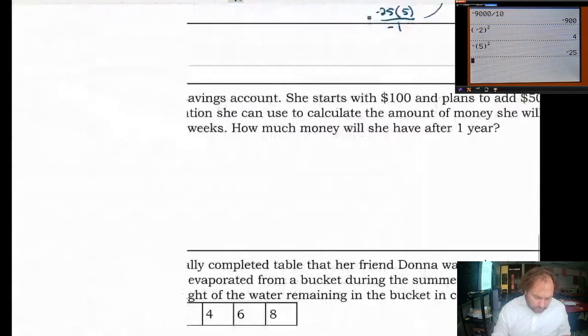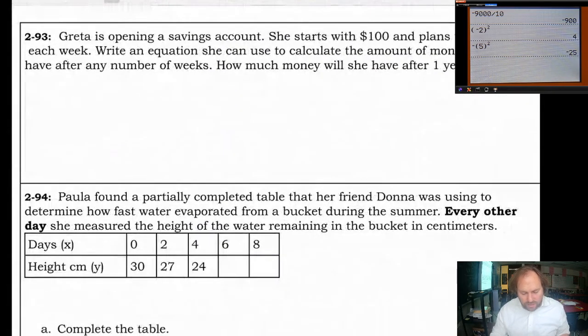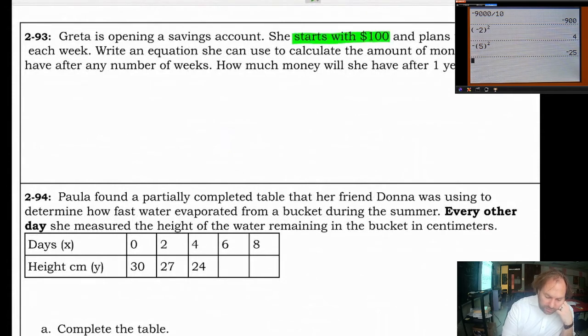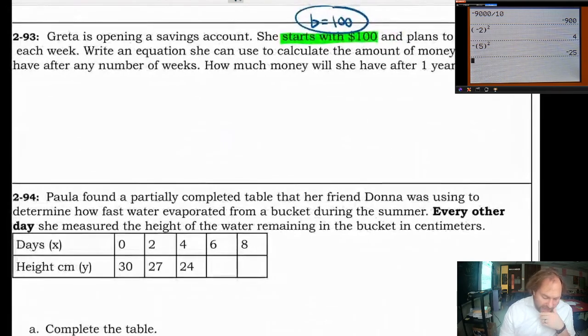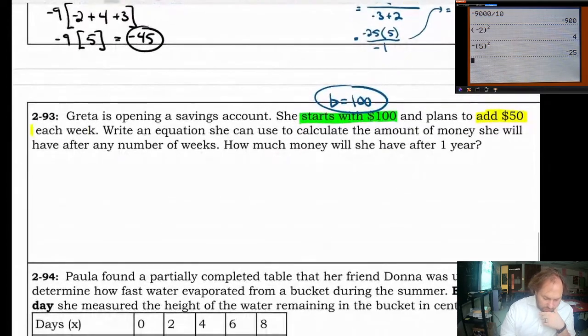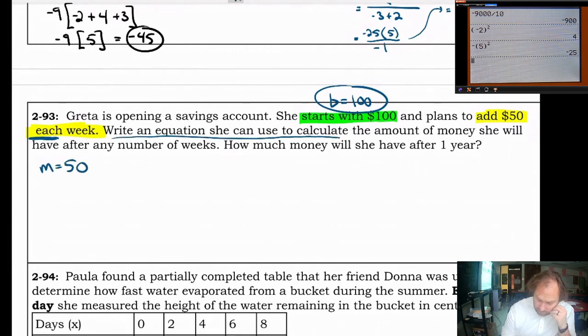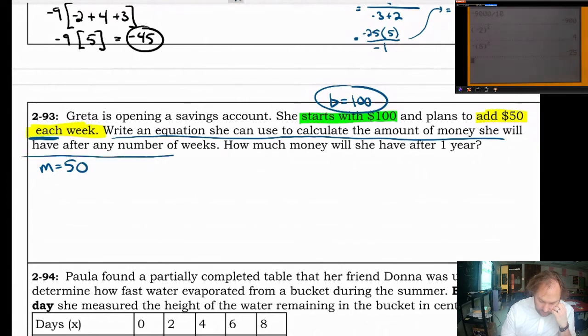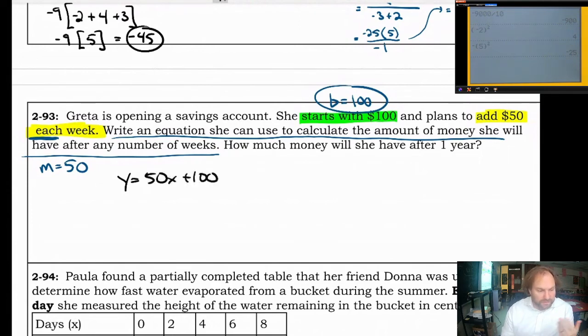Next question on the back side, we have 293. Greta is opening a savings account. She starts with $100. Starts with 100 is screaming out to me as a y-intercept or b-value. She plans to add $50 each week. There's one of those other key phrases. Add $50 each week. This is another one that's shouting out to me to be a slope. Each is kind of an everything. Every time, that's a rate of change. M is going to be 50. Write an equation so she can use to calculate the amount of money she will have after any number of weeks. That'll be really easy because we already have m and b. y equals 50x plus 100. There you go. She starts with $100 and adds $50 every week.